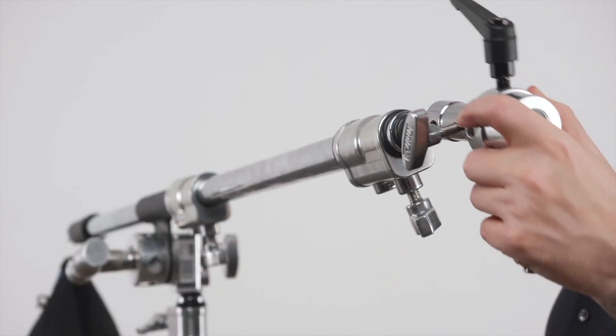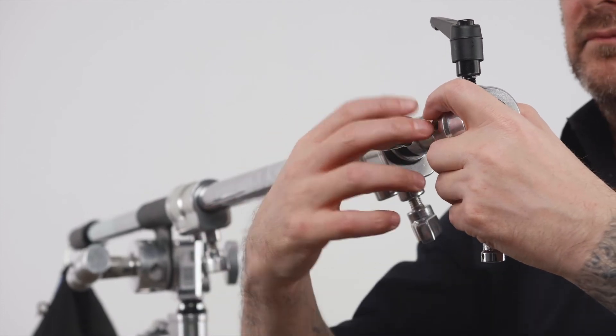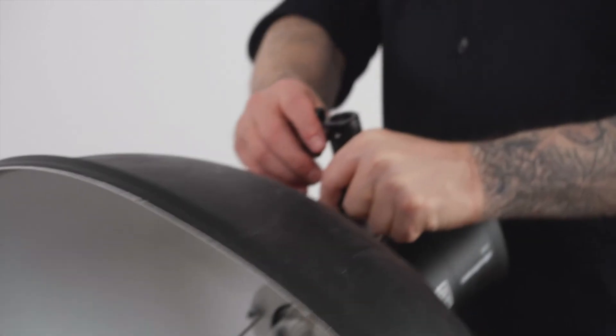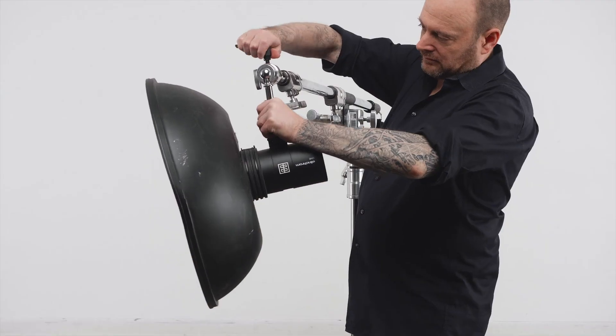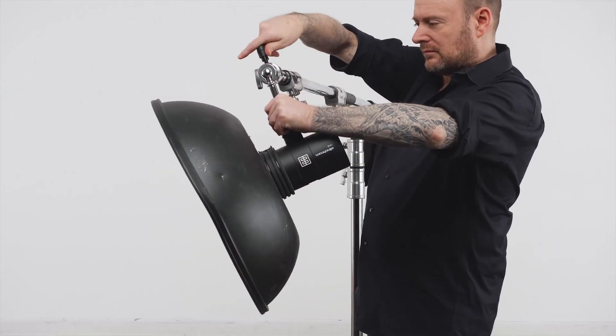Let's use our Supergrip baby finger to under-sling a monolite with a beauty dish off of Baby Boom. Now you have another way to easily angle and position your light.